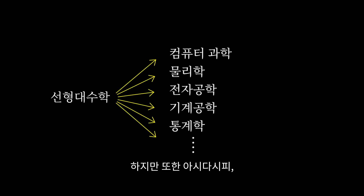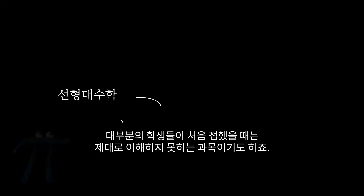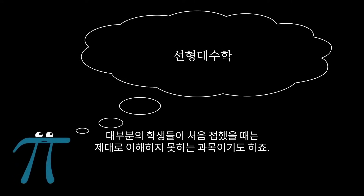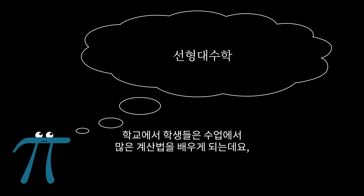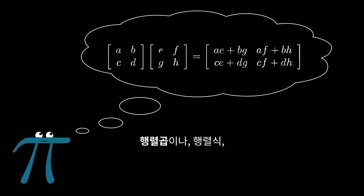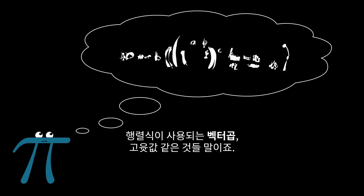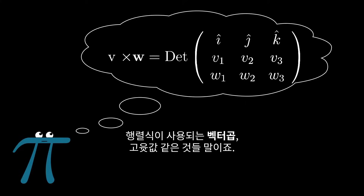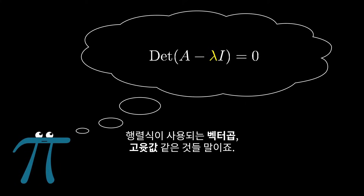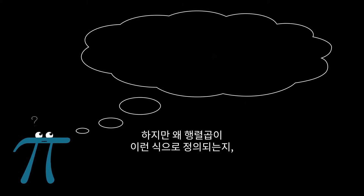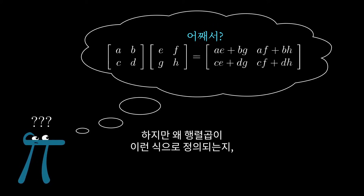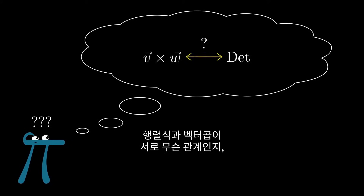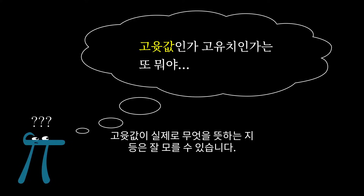But it's also, I've noticed, generally poorly understood by students taking it for the first time. A student might go through a class and learn how to compute lots of things, like matrix multiplication, or the determinant, or cross products, which use the determinant, or eigenvalues, but they might come out without really understanding why matrix multiplication is defined the way that it is, why the cross product has anything to do with the determinant, or what an eigenvalue really represents.